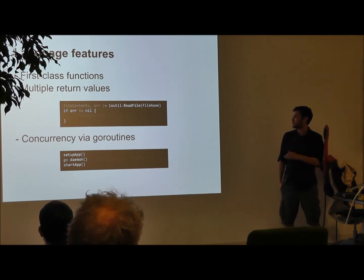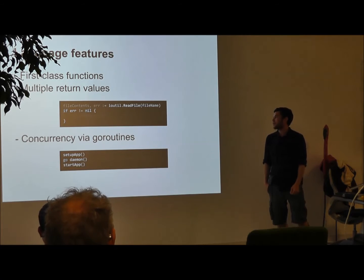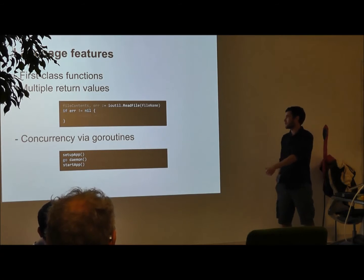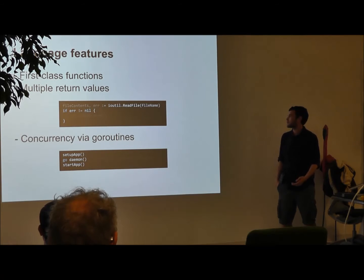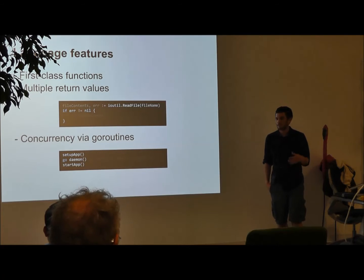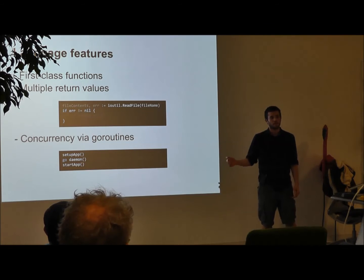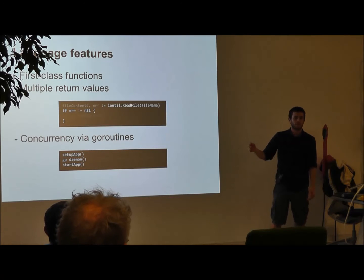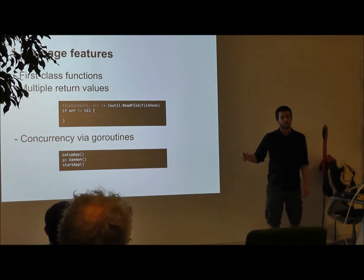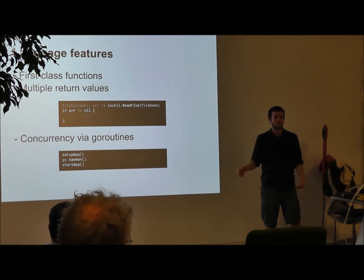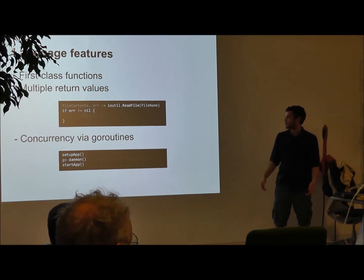Go has first-class functions and a really nice facility where functions can return multiple values. You can declare a function to return any number of values. This leads to the common error-handling pattern universally used in Go: any function that can possibly return an error returns an error object as the last return value, and it's the caller's responsibility to check that value. There are no exceptions in Go — the idea is to catch errors right when they occur.